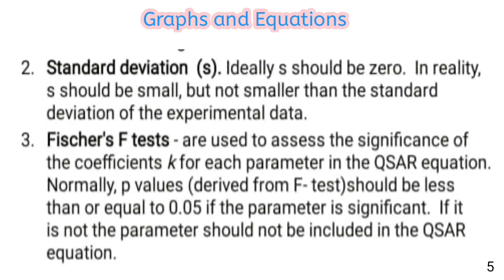Second is standard deviation, also called the standard error of estimate, represented as s. Ideally it should be 0, but in reality it should be small — though not smaller than the standard deviation of the experimental data. Third is the Fisher F-test, a statistical test used to assess the significance of coefficients for each parameter in the QSAR equation. The p-values derived should be less than or equal to 0.05 for the parameter to be significant; if not, the parameter should not be included in the QSAR equation. The p-value represents the probability of getting a result as extreme as the one actually observed.